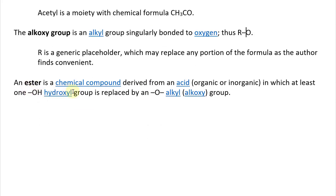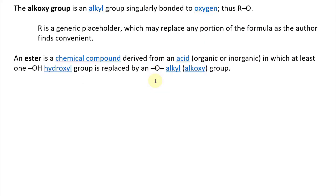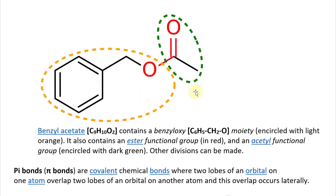An ester is a chemical compound derived from an acid — organic or inorganic — in which at least one -OH or hydroxyl group is replaced by an -O-alkyl or alkoxy group. So the OH is replaced by O- and then R-O. It's a lot of technical labeling of different chemical compounds and comparing them with others.